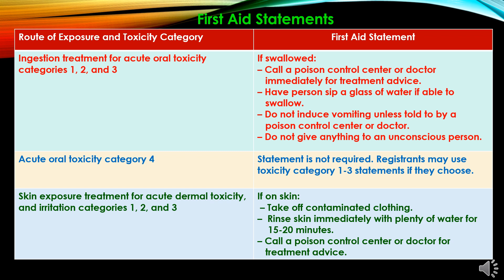Now we will study about first aid statements. For ingestion — treatment for acute oral toxicity in categories 1, 2 and 3 — the first aid statement reads: if swallowed, call a poison control center or doctor immediately for treatment advice; have the person sip a glass of water if able to swallow; do not induce vomiting unless told to do so by a poison control center or doctor; do not give anything to an unconscious person. For category 4, a statement is not required, though a registrant may use the category 1 to 3 statements if they choose. For skin exposure — treatment for acute dermal toxicity in categories 1, 2 and 3 — if on skin, take off contaminated clothing; rinse skin immediately with plenty of water for 15 to 20 minutes; and call a poison control center or doctor for treatment advice.